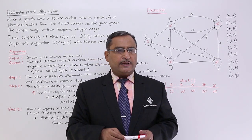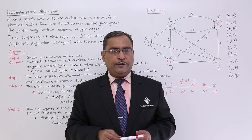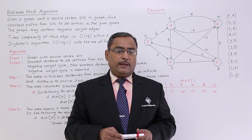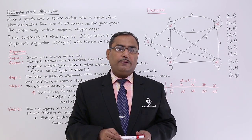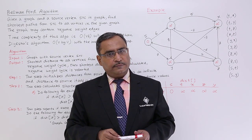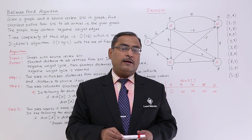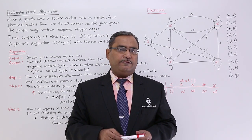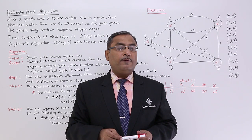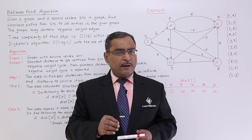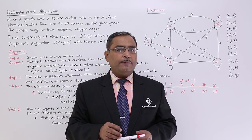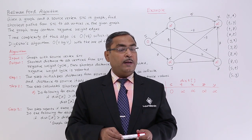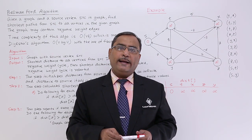In Dijkstra's algorithm, which we discussed in another video, we had the directed graph also weighted, but all the weight values were positive. Bellman-Ford algorithm can have negative weight values also for certain edges. So Bellman-Ford algorithm can handle negative weights.